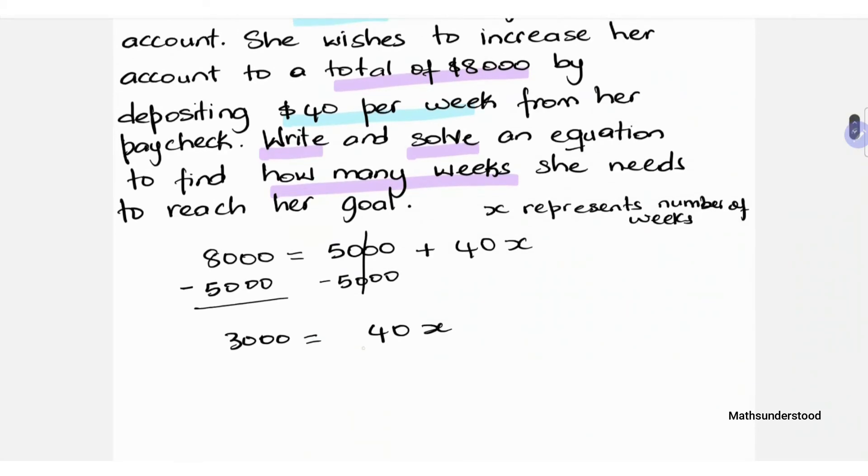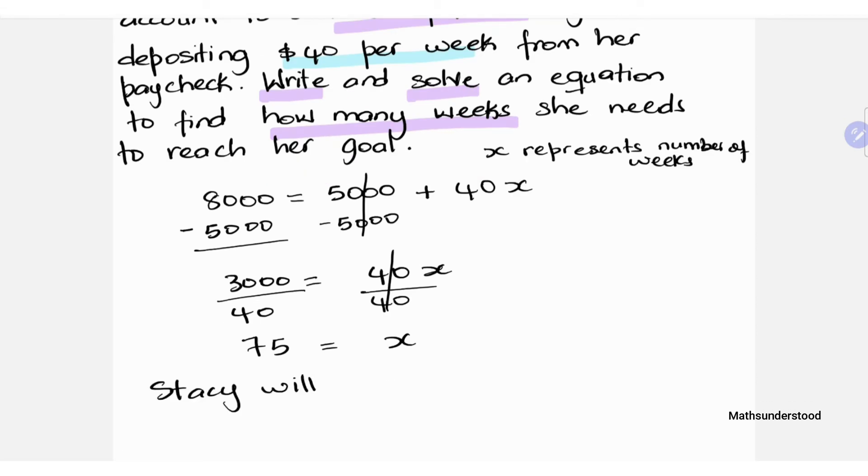Next we want to just go ahead and divide both sides of the equation by 40 in order to find our value for X. Once you've done that, we're left with X being equal to 75. So what the 75 tells us is that Stacy needs 75 weeks in order to reach her goal.